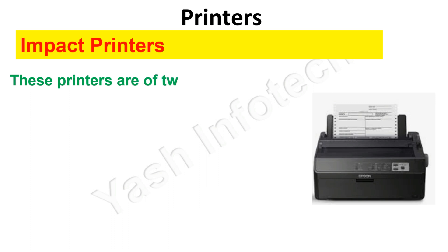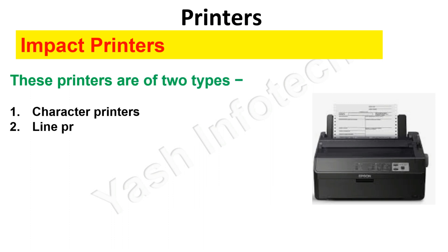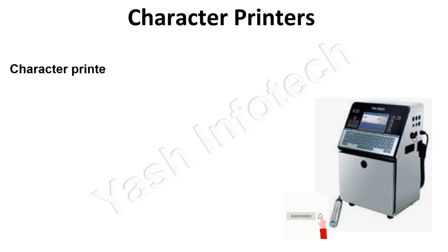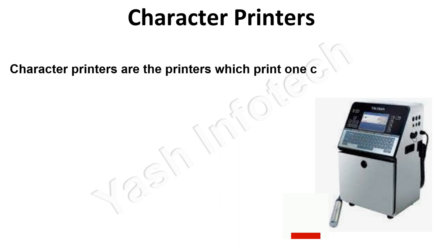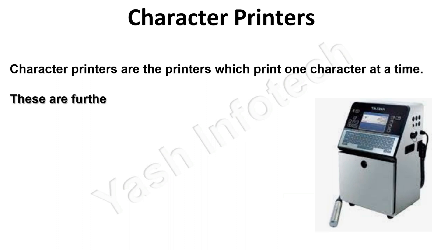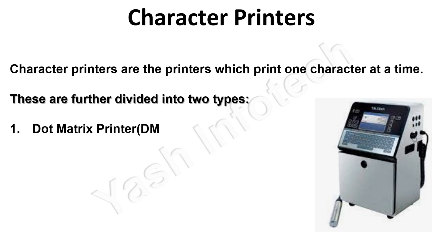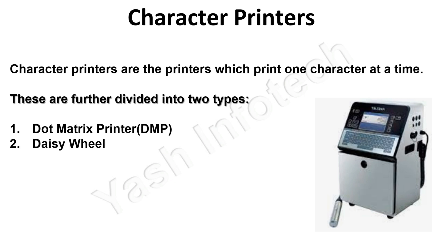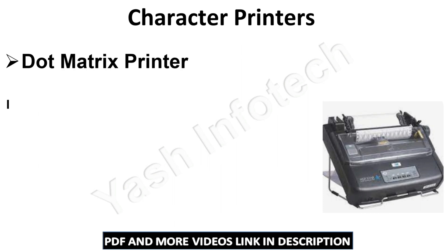Impact printers are of two types: character printers and line printers. Character printers are printers which print one character at a time. These are further divided into two types: dot matrix printer (DMP) and daisy wheel.